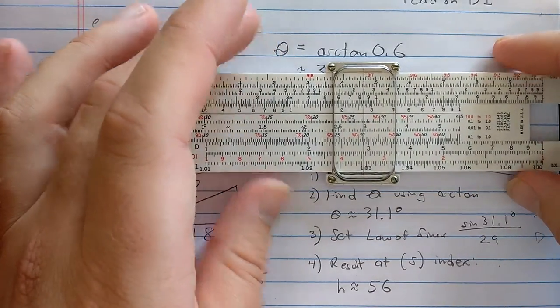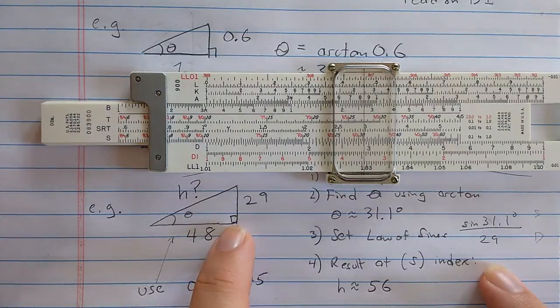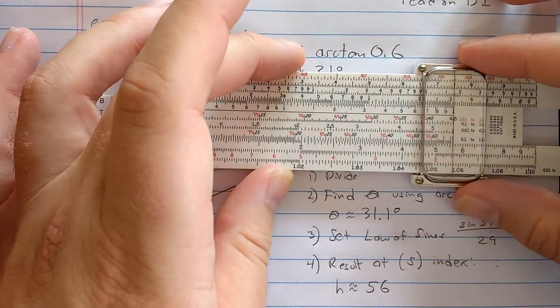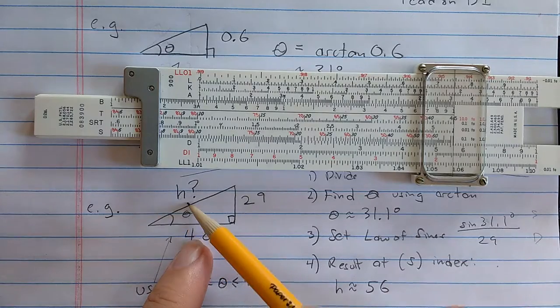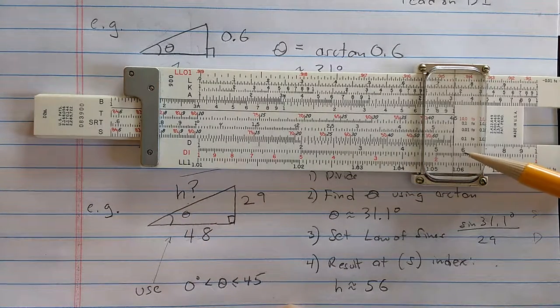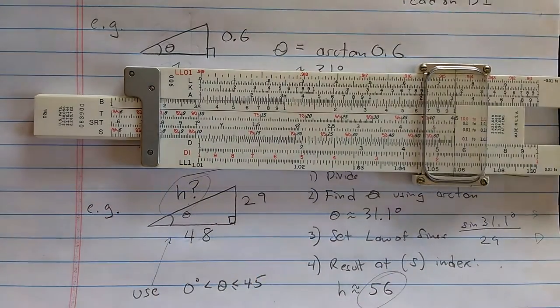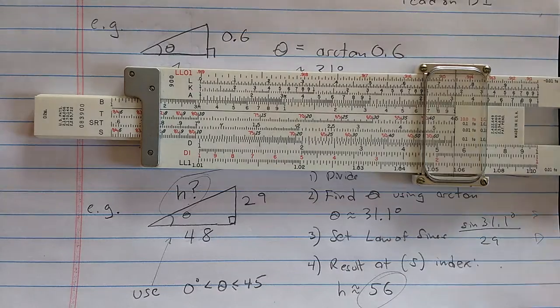Now that I've done that, I'm using the law of sines. So I go out to 90 degrees, which is at the index of the S scale, to find the length of the side across from that 90 degree angle. And then I read the result there, 56 on the D scale. So there I found the hypotenuse length of that triangle actually avoiding the Pythagorean theorem.